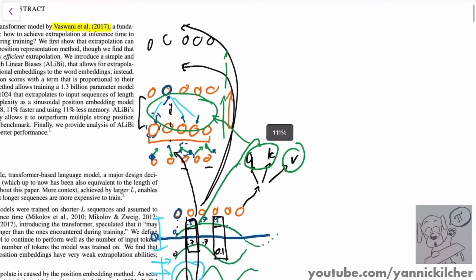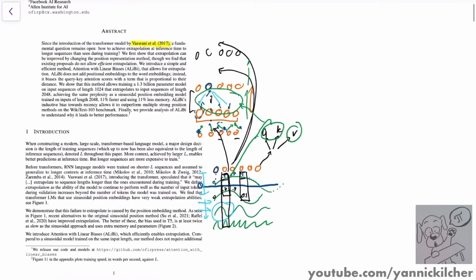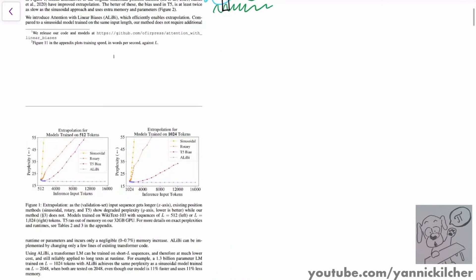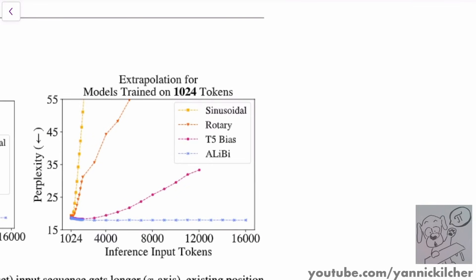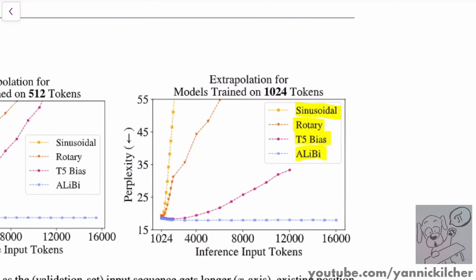All right, so these are the sort of improvements that came together in the last few papers. They compare different embeddings right here. So this sinusoidal is the original one, rotary embeddings as they're used in GPT-J, T5 bias as it's used in T5, and then their new one, Alibi. And here you can see this model, for example, is trained on 1024 tokens in its training distribution.